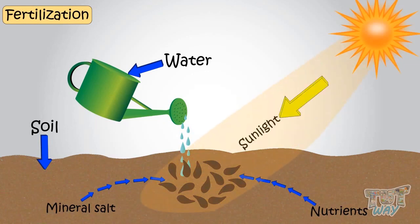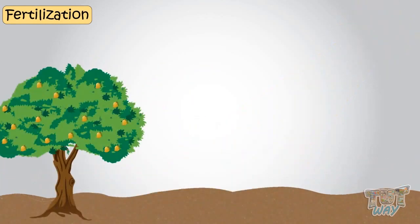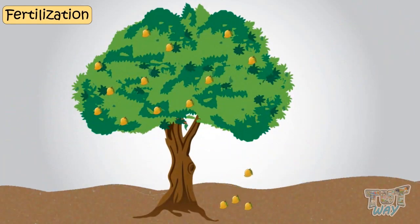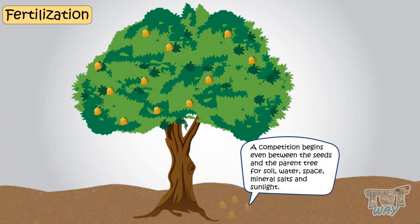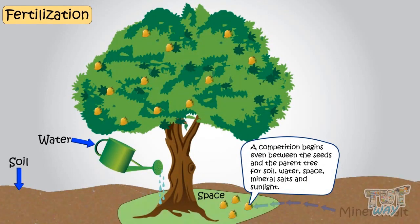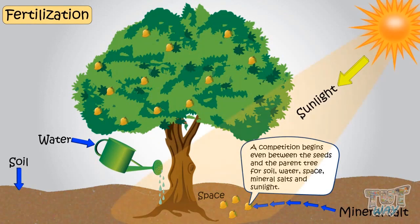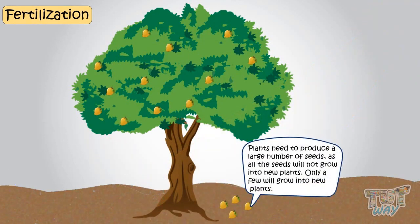And the strongest or fittest seeds win the fight for survival or the fittest seeds would grow. For example, many seeds fall from the trees and there begins a competition among the seeds and even between seeds and the parent tree for soil, water, space, mineral salts, and sunlight. So, plants need to produce a large number of seeds, as not all seeds will grow into new plants. Only a few ones will grow into new plants.